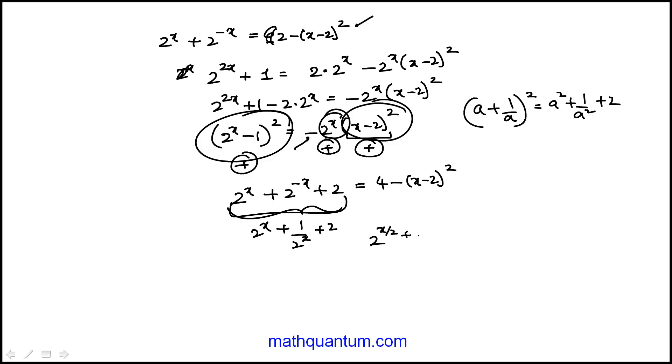This becomes 2 to the x over 2. So instead of doing it minus, which is the better approach, I ended up doing it this way.